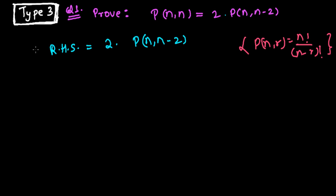Using the same formula, I will get 2 times n! divided by (n-(n-2))!. When the minus comes outside, minus times minus becomes plus, so it will be plus 2 factorial.